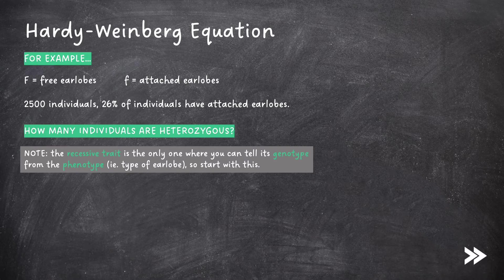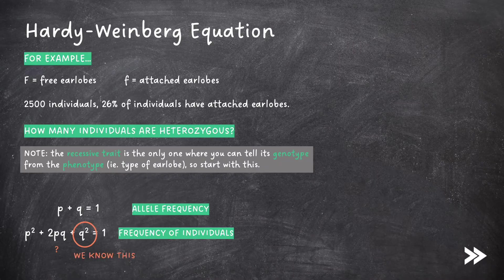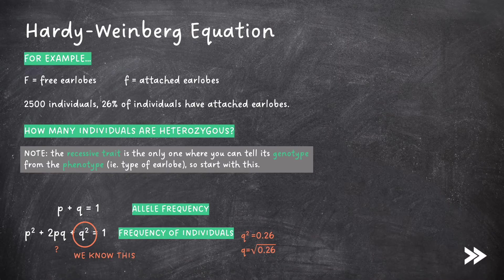So we need to start with the recessive trait. The question asks us to calculate how many individuals are heterozygous, therefore we need to use the second equation as the question is about the frequency of individuals and we want to find 2pq. We know that 26%, or 0.26, of individuals have attached earlobes. Attached earlobes are coded for by the recessive allele, lowercase f, so to have attached earlobes you must have a homozygous recessive genotype. Therefore q² = 0.26.